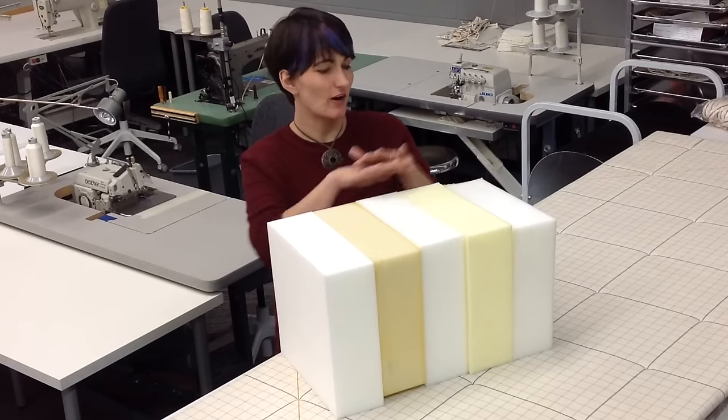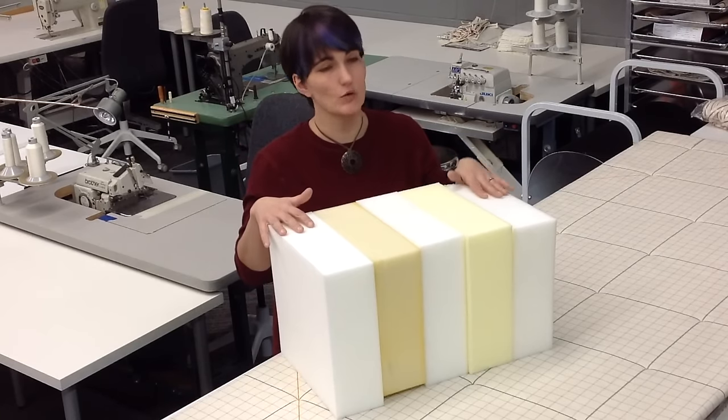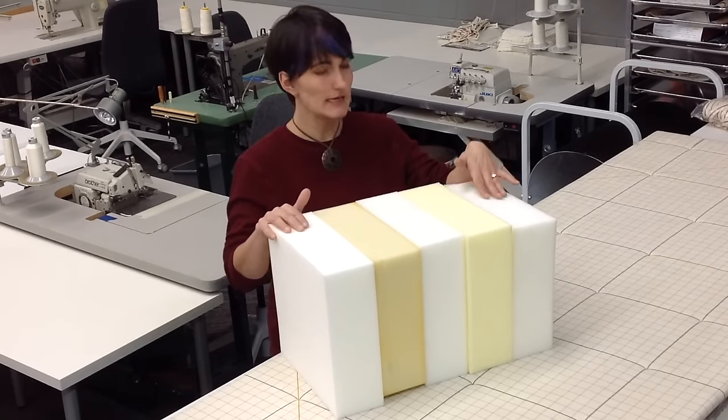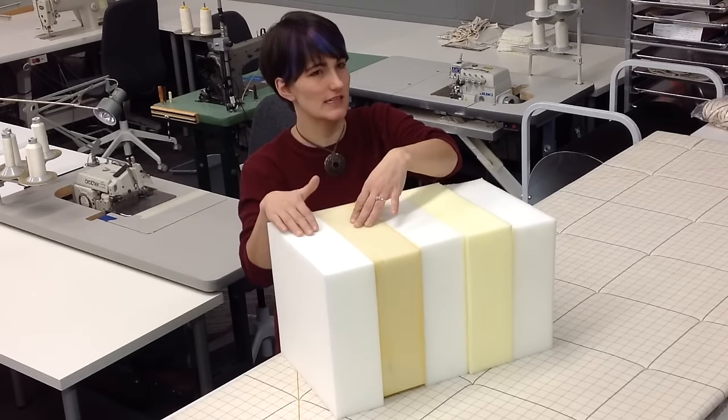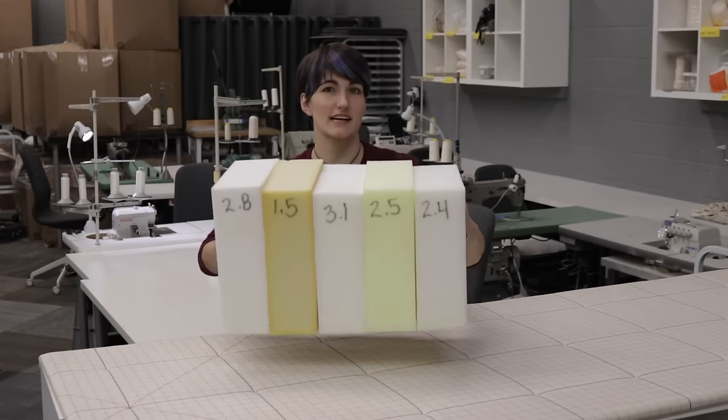Right now, my samples are ordered from softest to firmest or lowest IFD to highest: 18, 30, 33, 50, and 70. Now I'm going to rearrange them according to density.